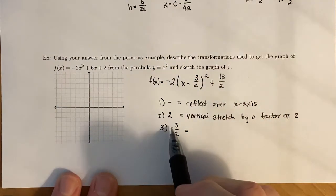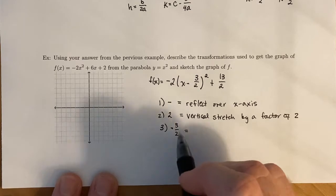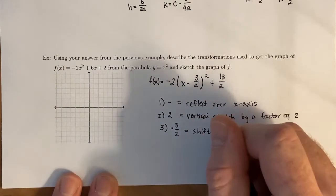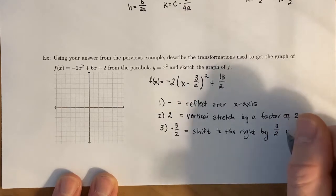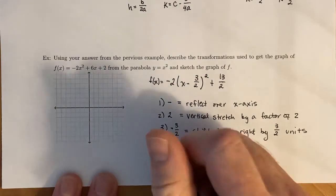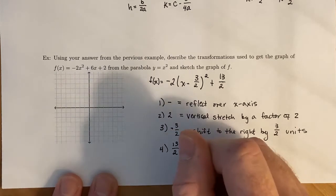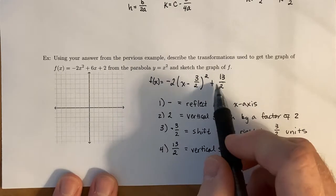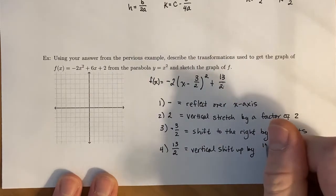Remember that if it's a negative next to the x, it is opposite of how you want to interpret it. So this is actually a shift to the right by 3/2 units. And now lastly, we have the +13/2 at the very end, which means this is a vertical shift. Since 13/2 is a positive, this is up by 13/2.